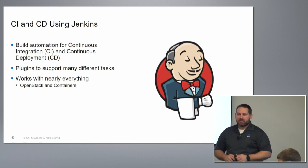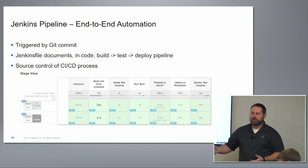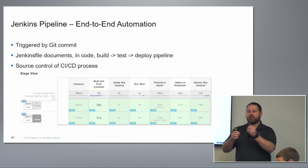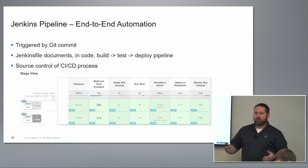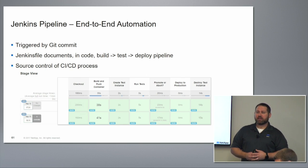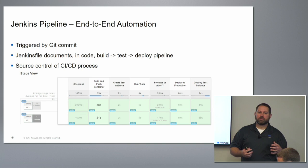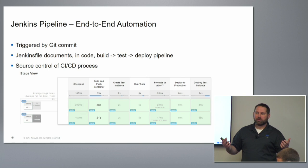Jenkins, through things like pipeline, also takes advantage of all the other tools we've talked about. I can encode and document exactly what my test and deployment process is. If I don't want to use the Jenkins plugin because everything's already defined in a Puppet manifest, great — leverage Puppet. If I just need to deploy my application into Kubernetes, Jenkins can take advantage of all of those things. It's a fantastically flexible tool. The moral of the story with Jenkins is it takes advantage of all those other things and also has its own goodness.